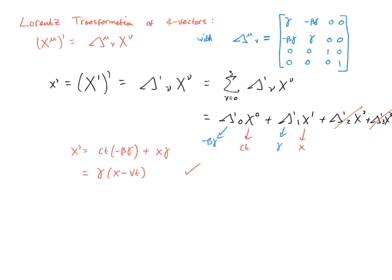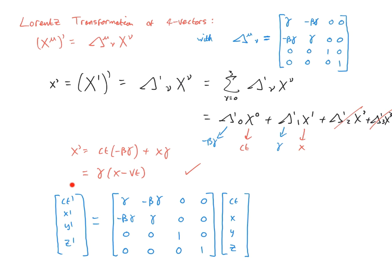If you prefer to avoid index notation, you can think of all of this as a straightforward matrix product: Lambda is the 4×4 matrix, and the four vector is a 4×1 column vector. The primed four vector x'^mu equals the matrix product Lambda times x^nu. If you want the x' element, you multiply the second row of Lambda by the column vector — and indeed that gives exactly the same result.